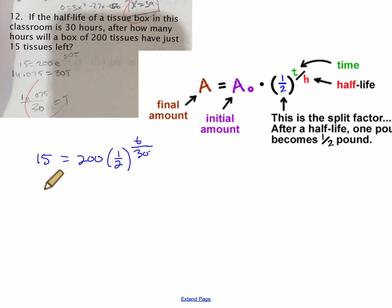Okay, so then we have 15 over 200, which becomes 3 over 40. So that equals one-half to the T over 30.